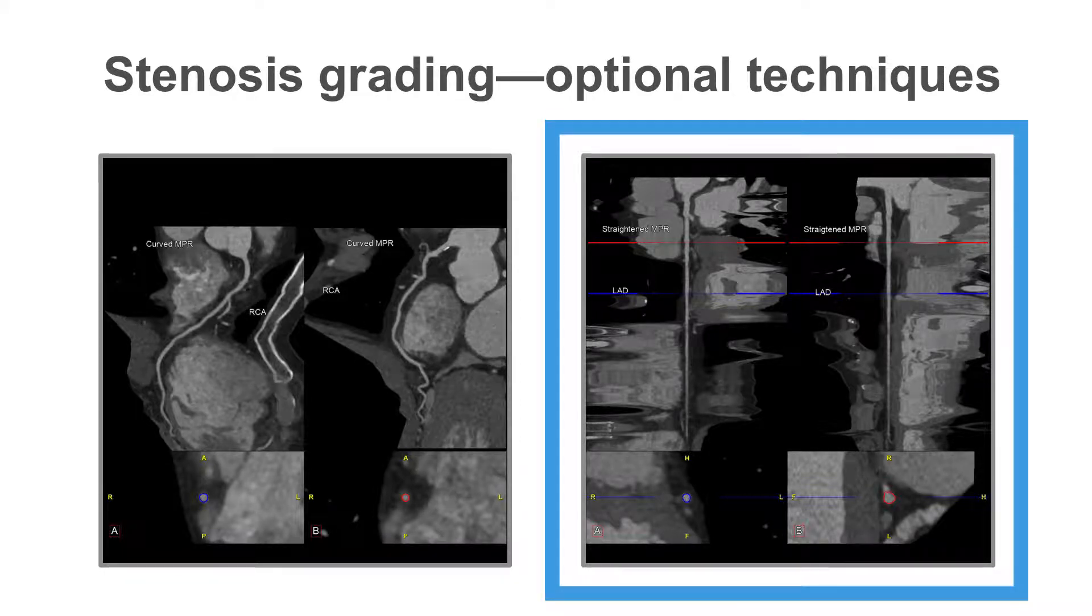The right hand image shows a variation of this, the so-called straightened multi-planar reformatted image where the vessel is laid out straight by the computer.